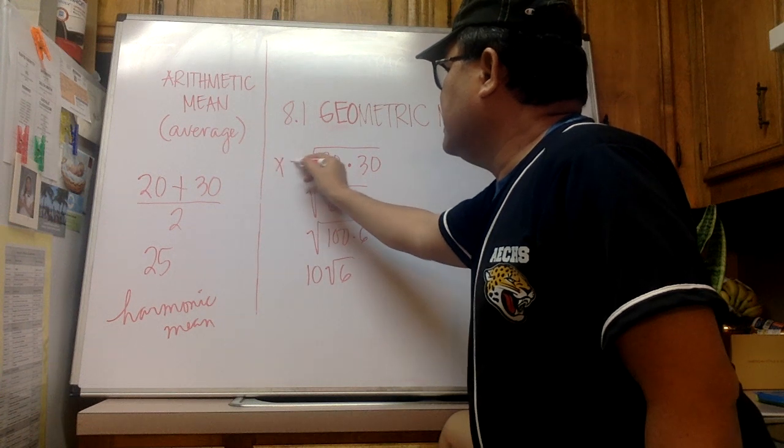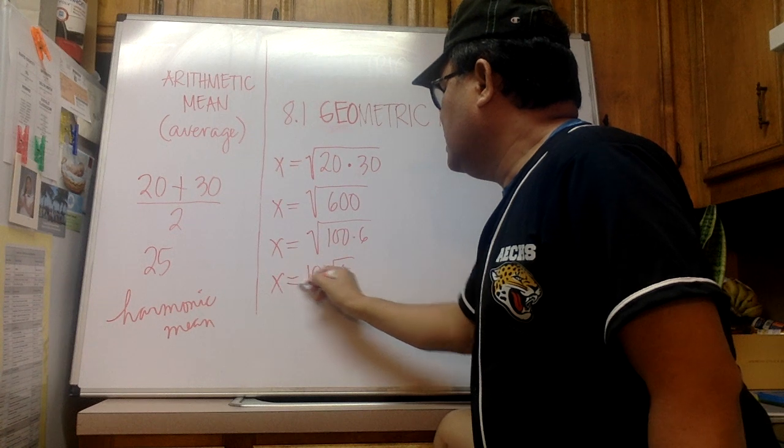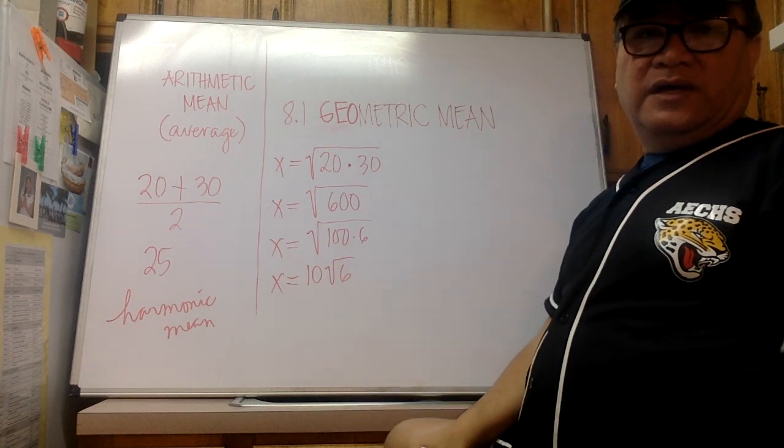And 100 is a perfect square, so we can simplify our answer as 10 square root of 6. If this quantity is equal to x, then we can write x = 10√6, and this is our final answer.